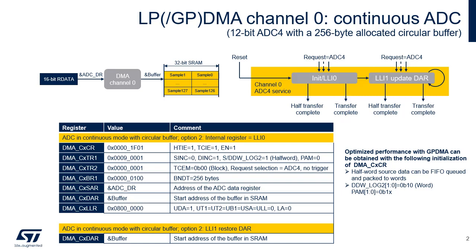This is achieved by programming the destination data width to word and setting the PAM field to 1X, in order to enable the source data FIFO queuing and packing up to the destination data width.